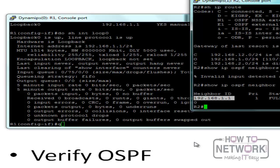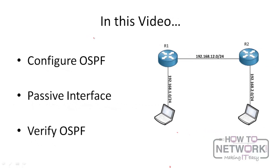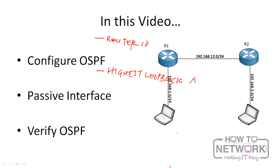The reason R1 is choosing 192.168.1.1 as its router ID is because of the OSPF router ID selection process, which is a three-step process. First, you can manually configure the router ID and it will always be used. Second, it uses the highest loopback address — loopbacks are preferred over physical addresses because they never go down and are more reliable. Third, it uses the highest physical IP address.